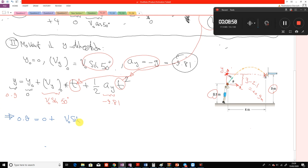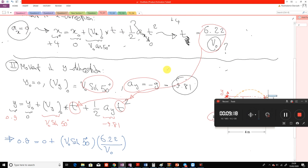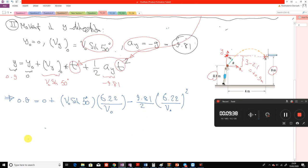Plus V naught sine 50 degrees. We replace the t from the relationship we derived in the previous step from this relationship for t, and minus 9.81 over 2, times t to the power of 2. If you solve this one...